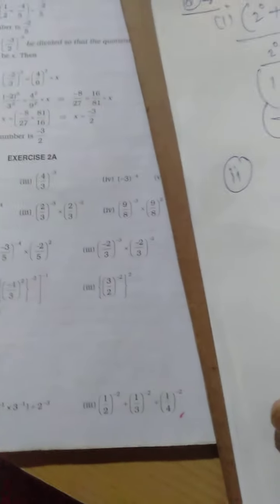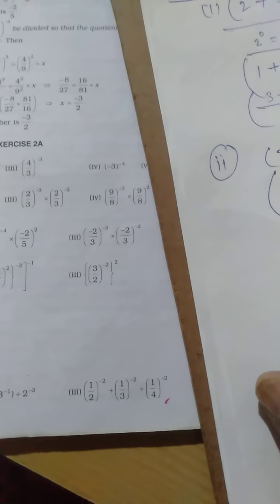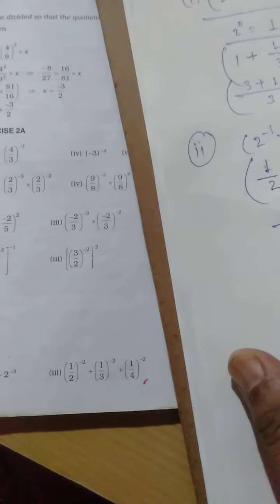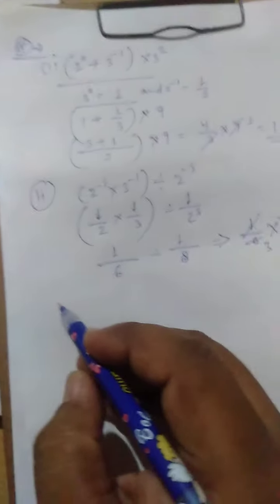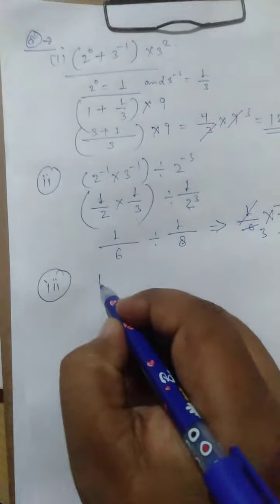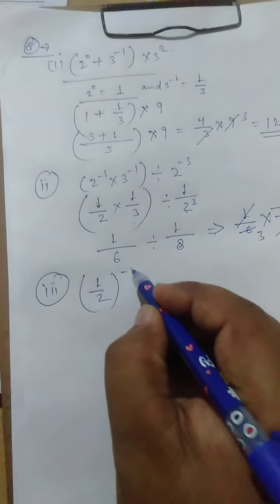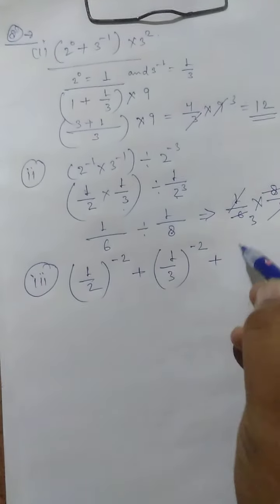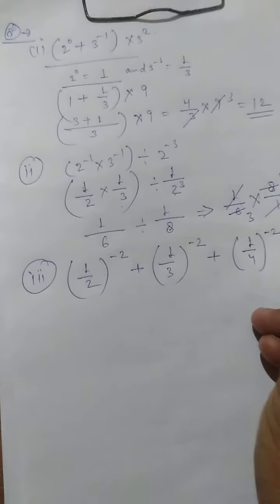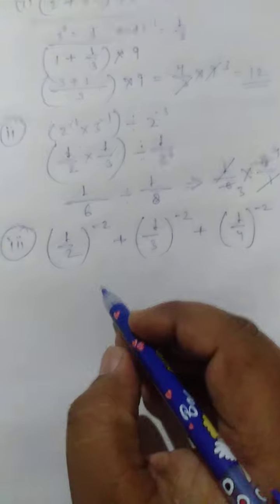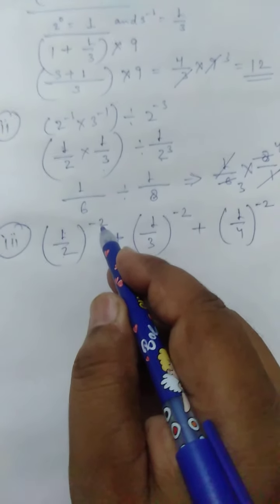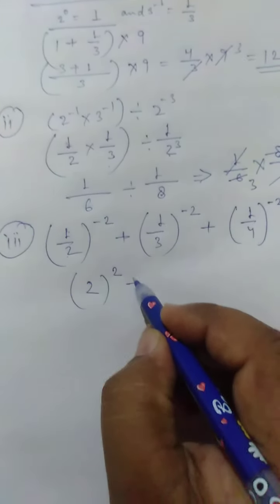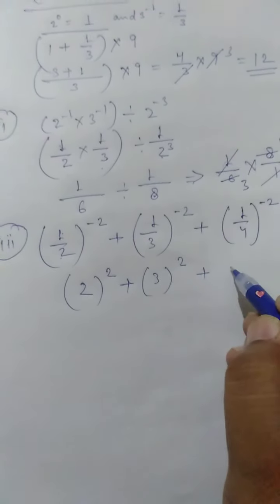Now look at the third part of question 8: 1 upon 2 whole power minus 2, plus 1 upon 3 whole power minus 2, plus 1 upon 4 whole power minus 2. The powers are negative, so we convert to positive powers. Then we get 2 power 2 plus 3 power 2 plus 4 power 2.